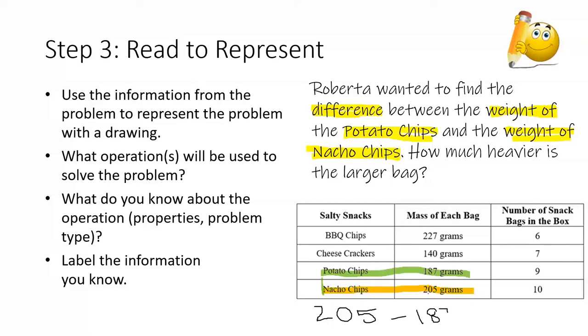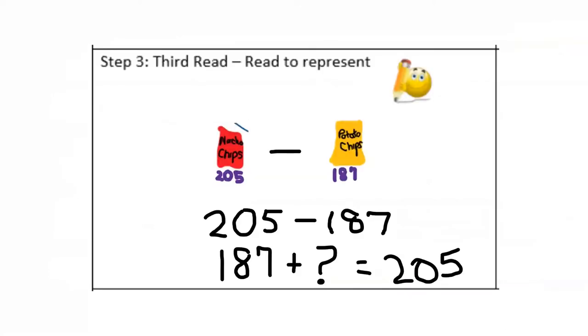So, I'm thinking I need to solve 205 minus 187. But I also know that addition is the opposite or inverse of subtraction. So, I might think of it as 187 plus something equals 205. So, you can see on my drawing, I now have my model, my nacho chips minus my potato chips to give me the difference between the two. Again, I can think of it as 205 minus 187 or I can think of it as 187 plus something equals 205.